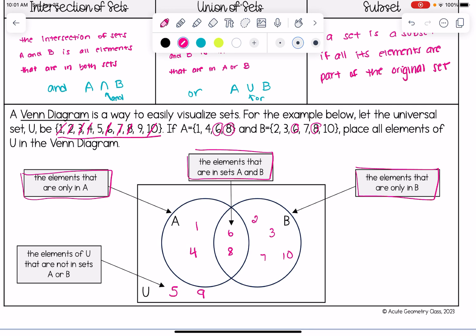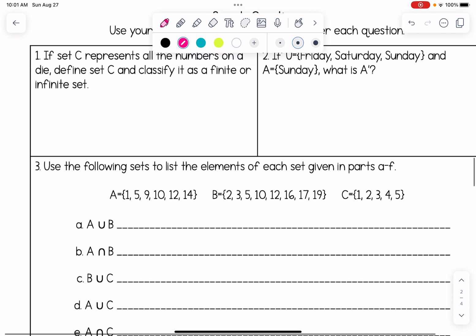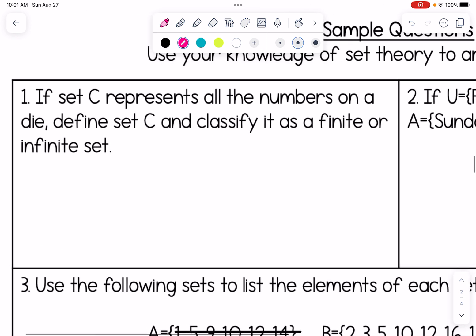Number one, if set C represents all the numbers on a die, define set C and classify it as finite or infinite. Well a die has the numbers one through six so we're going to say set C is equal to curly bracket notation one, two, three, four, five, six. Those are all of the numbers on a die and since I can count up those elements we are going to call this a finite set.